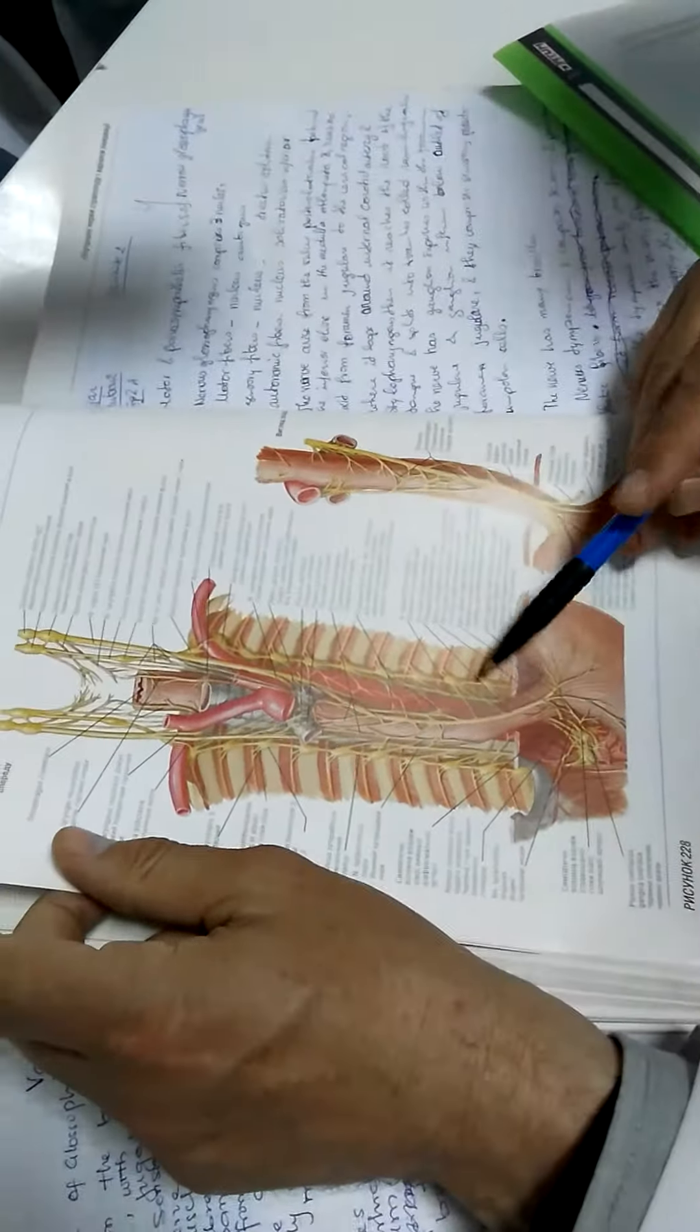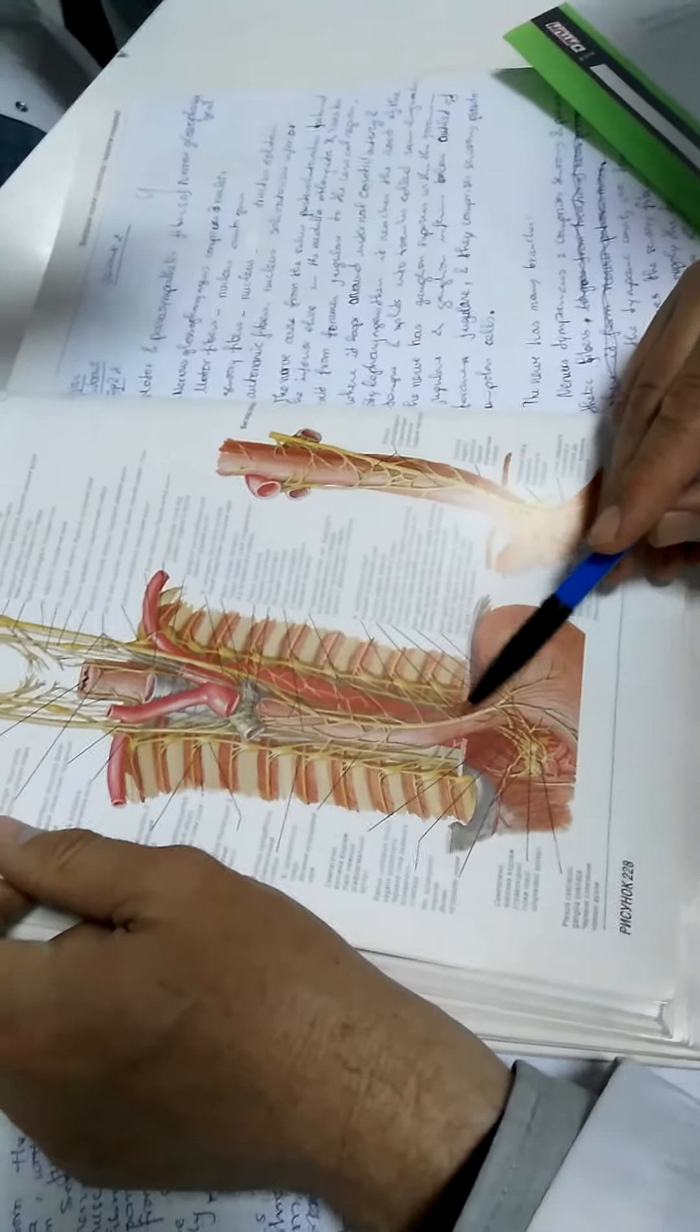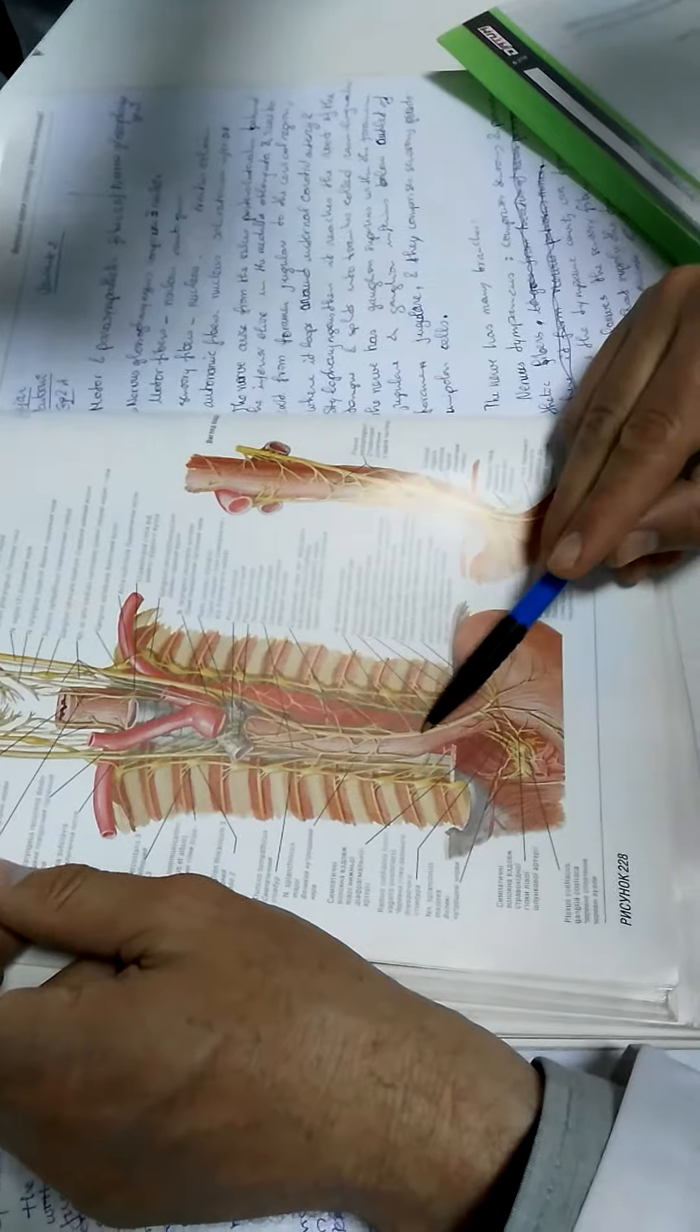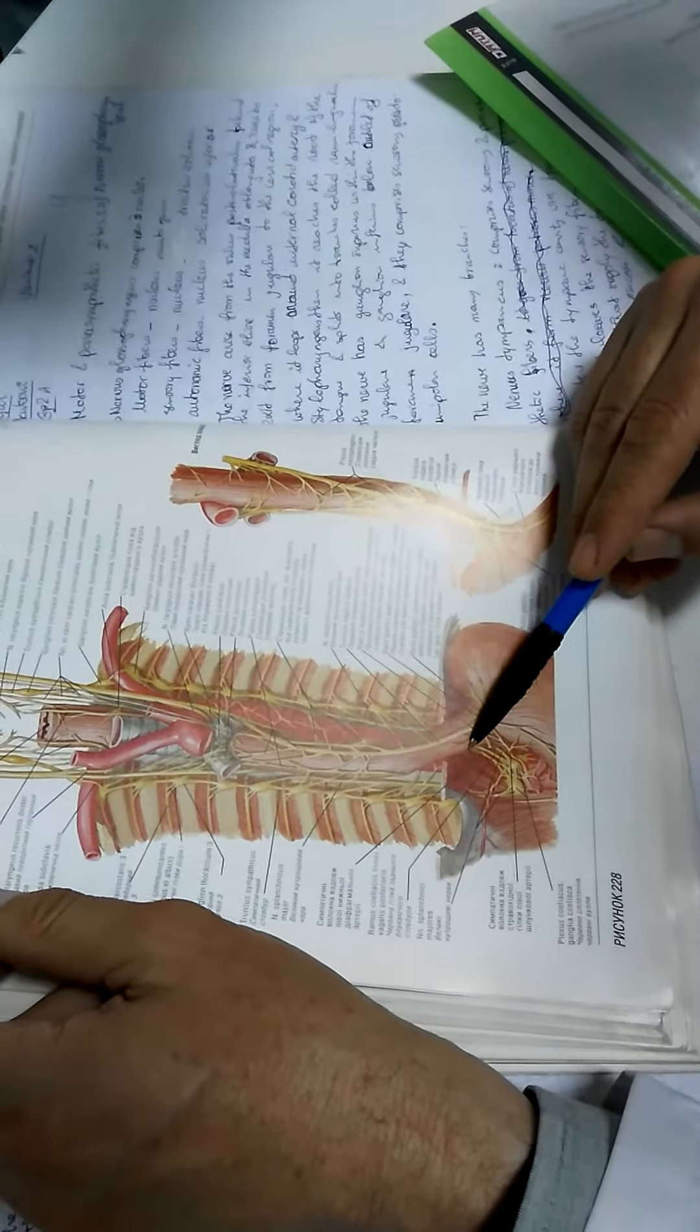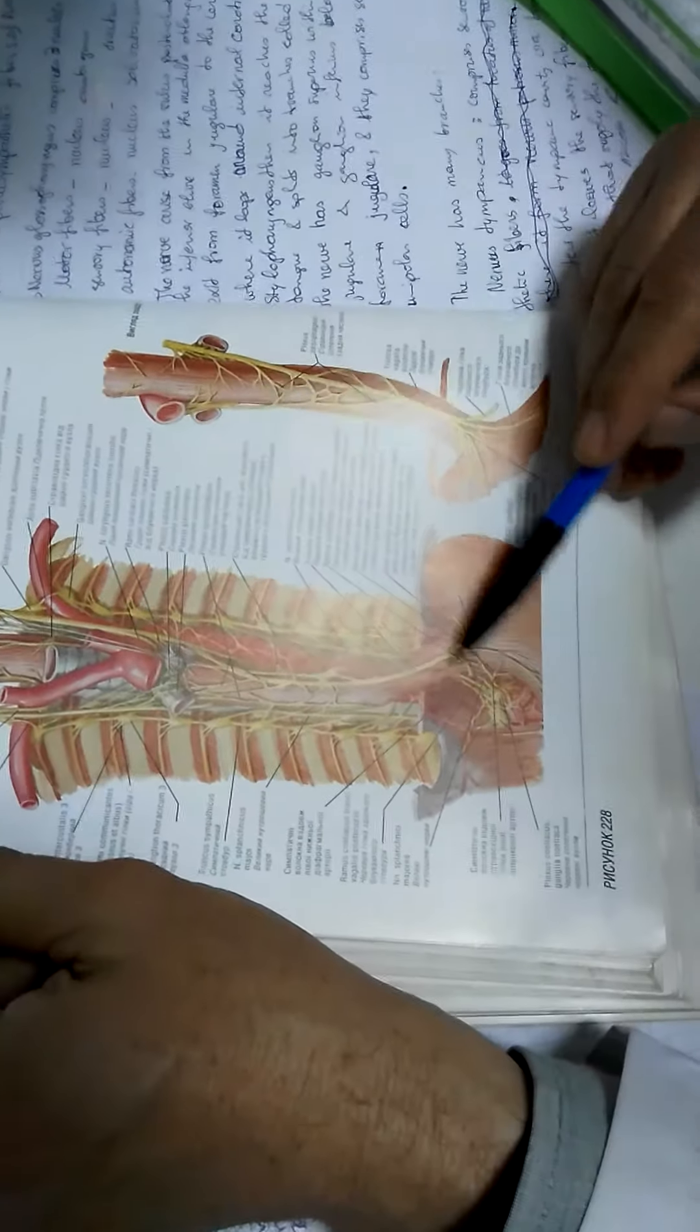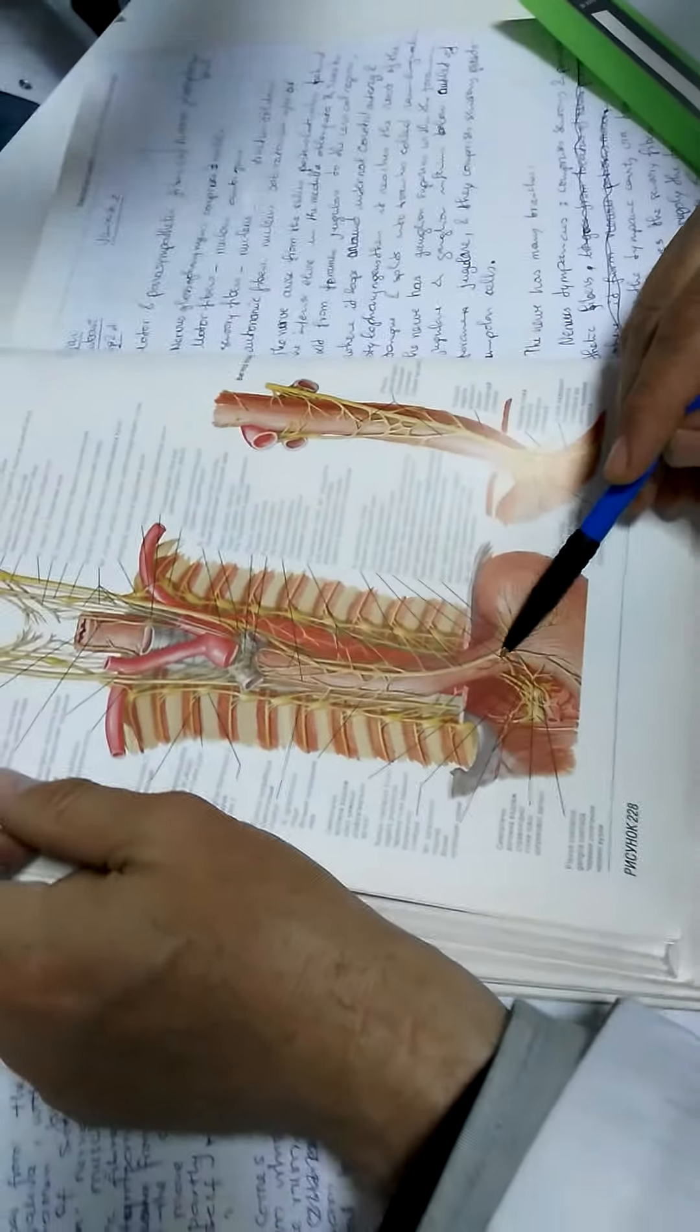In this place they change its name. We have truncus vagalis anterior, continuation of the left vagus nerve, and truncus vagalis posterior, continuation of the right. And the right one and left one.